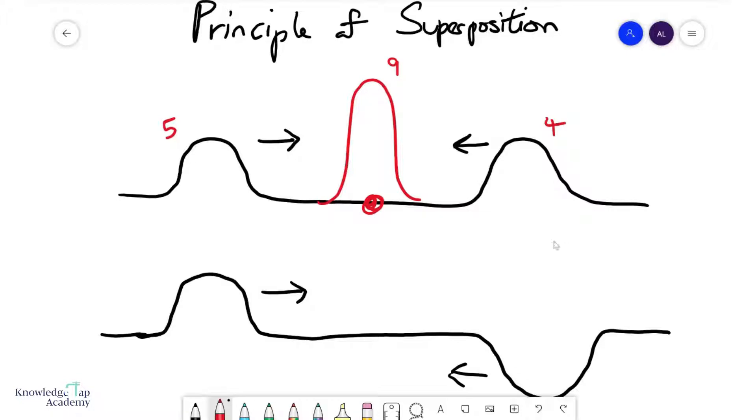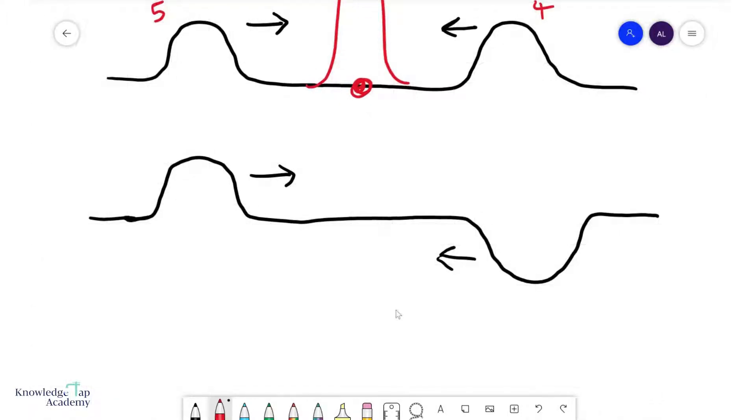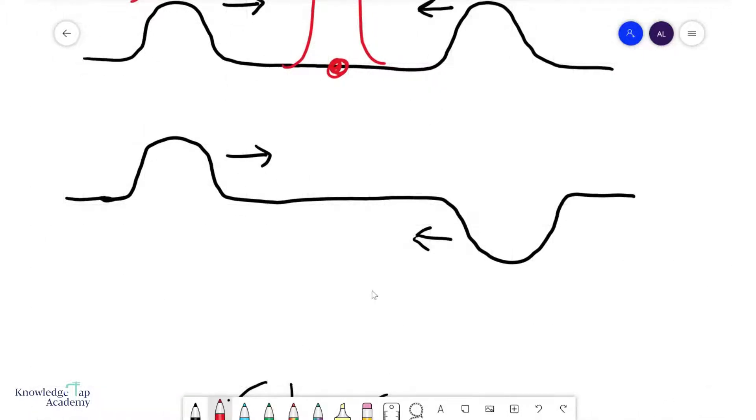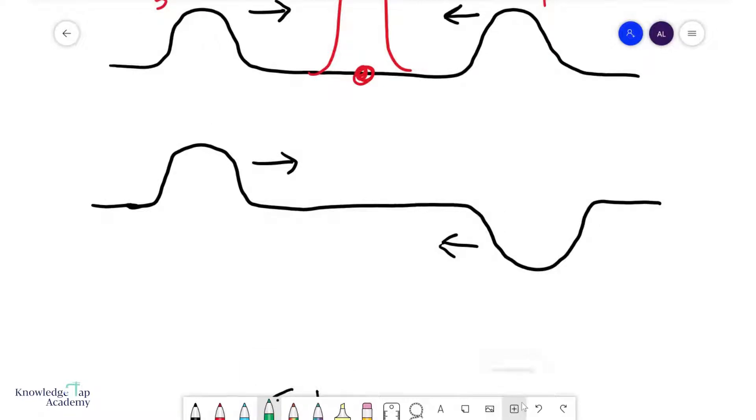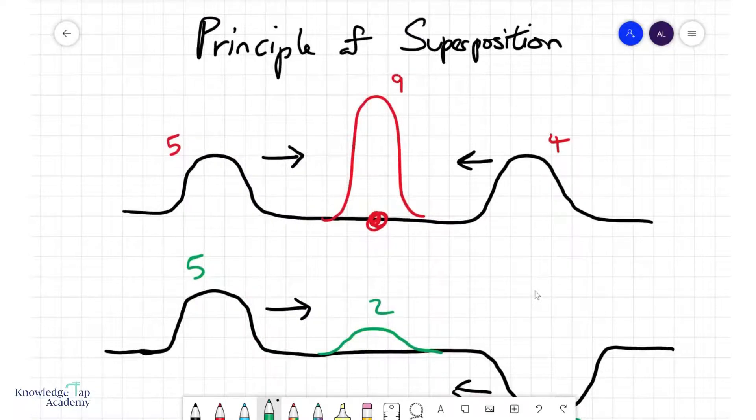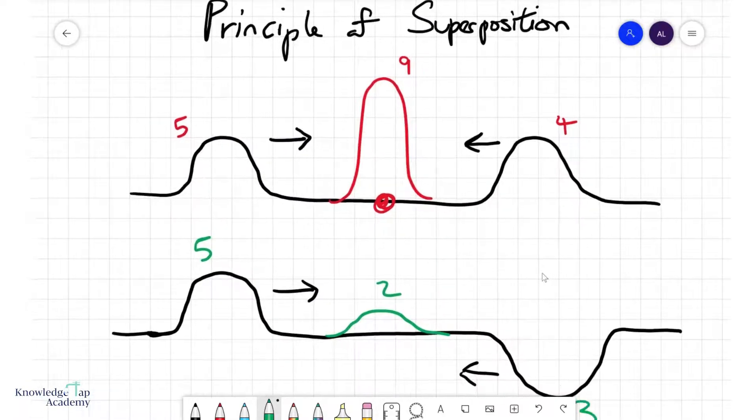Okay, now of course, I can also see this if the waves come in opposite to each other like so. If this was then 5 units and this was minus 3 units, then what you're going to get is something like this, 5 plus minus 3, a resultant wave of only 2 units. So this is essentially what the principle of superposition says. Very simple.